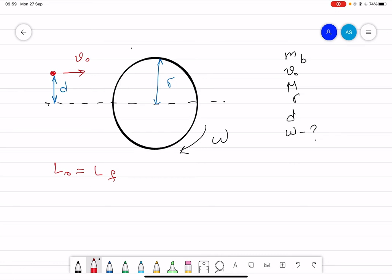Initially, the cylinder was not moving, only the bullet is moving. Therefore, L initial will be equal to the mass of the bullet, velocity of the bullet, and then D distance.